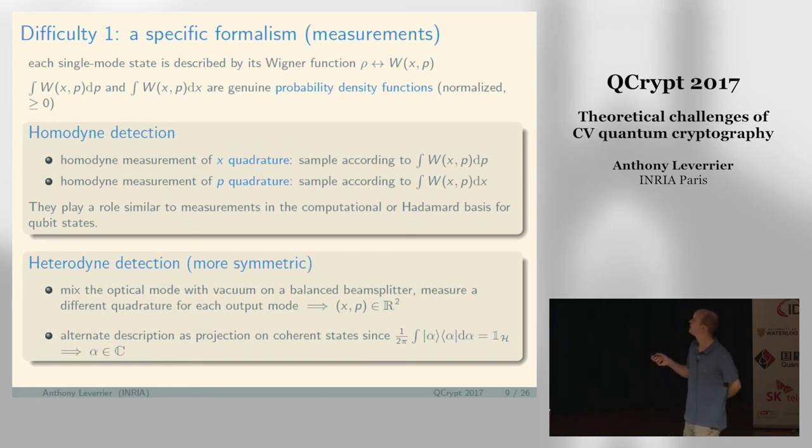What you can do is cheat a little bit. You can send your state into a balanced beam splitter, get two output modes, and measure the x-quadrature for one output mode and the p-quadrature for the second output mode. This way you get two measurement outcomes, giving you some approximation of what you would have measured with just an x measurement or a p measurement.